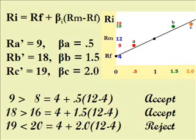And B had an actual contracted achieved rate of 18, beta of 1 and 1 half, 1 and 1 half times the premium of 8, plus the intercept of 4 gives us 16. But 18 is better, it's above the line, we accept it.